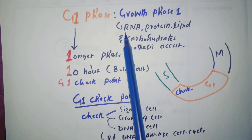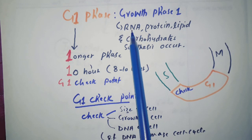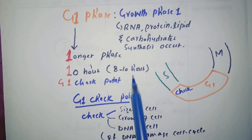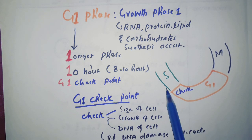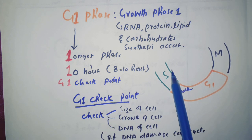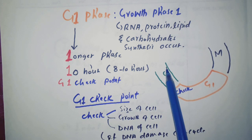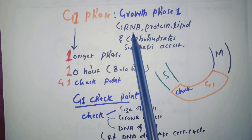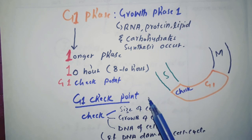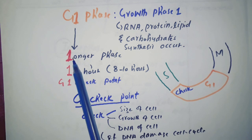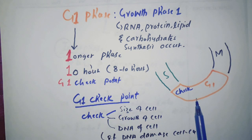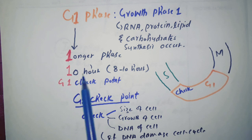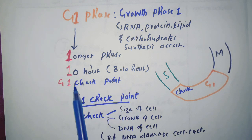G1 phase can also be called Gap phase 1. There will be growth — specifically, synthesis of RNA, proteins, lipids, and carbohydrates — because before entering S phase (DNA replication), the cell must first confirm that growth has occurred properly. From the letter shape of '1' resembling 'L', we can remember G1 is the longest phase in interphase. From '10', we remember it takes approximately 10 hours.